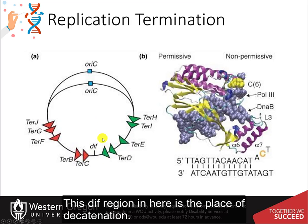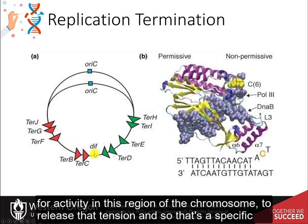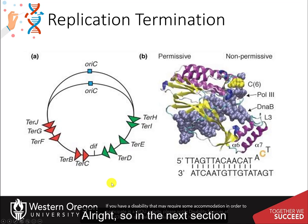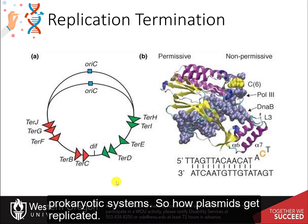The DIF region is the place of decatenation, where the topo-4 enzyme is going to be particularly important to release that tension — that is a specific place where topo-4 works on the DNA. In the next section, we're going to talk about the replication of some extrachromosomal elements within prokaryotic systems — specifically, how plasmids get replicated.